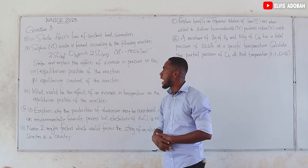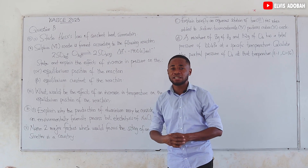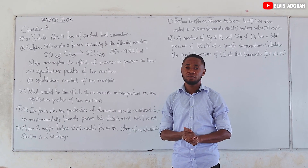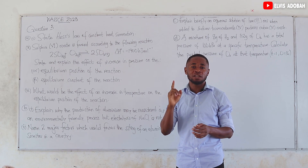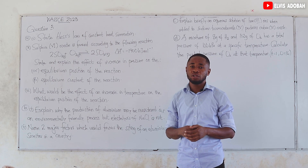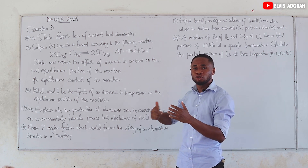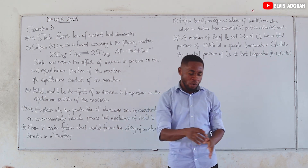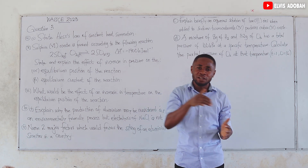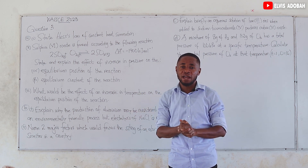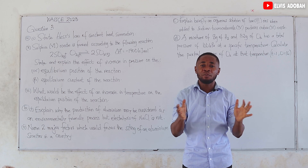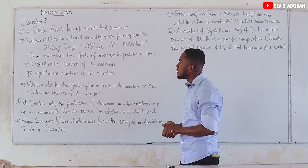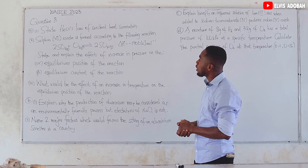Question 3a(i): State Hess's Law of Constant Heat Summation. Hess's Law states that the enthalpy of a reaction is independent of the reaction path. The total enthalpy change doesn't matter which route we take — so long as it starts from A and ends at C, whether we pass through B or go directly from A to C, the total enthalpy change is the same.